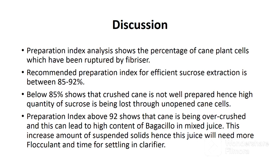A preparation index above 92% shows that cane is being over-crushed, which can lead to a high content of bagacillo in the mixed juice. The presence of high bagacillo content in mixed juice increases the amount of suspended solids, meaning the juice will need more flocculant and time for settling in the clarifier. If the index is above 95%, the lab analyst should inform the mill engineer to feed the fibrizer with more cane to reduce the strength of the tips.